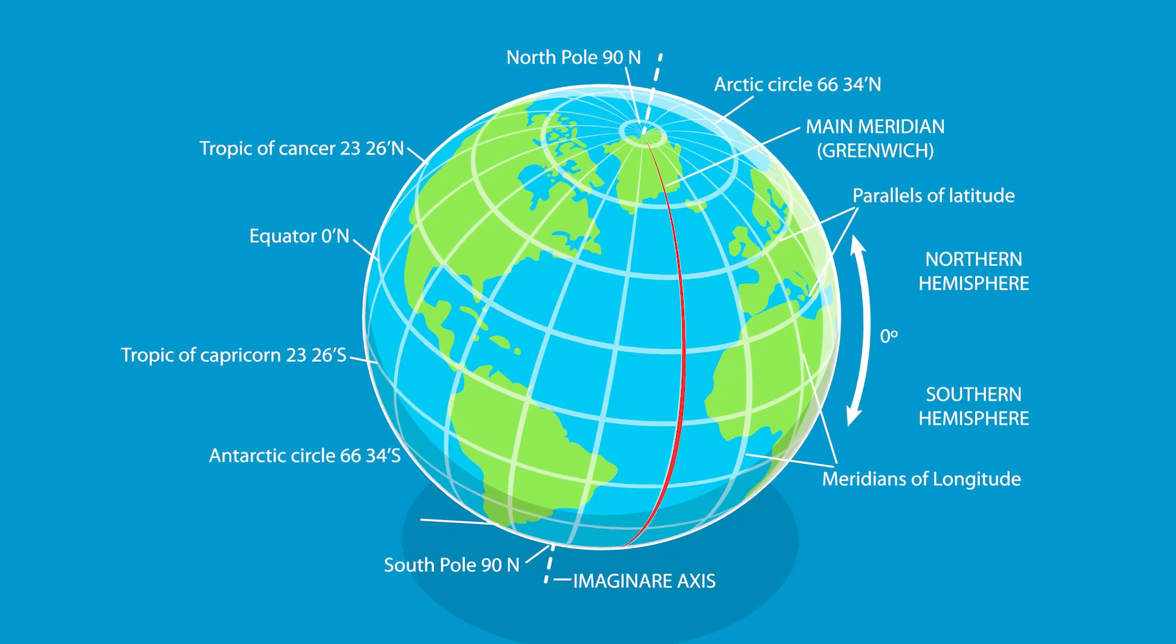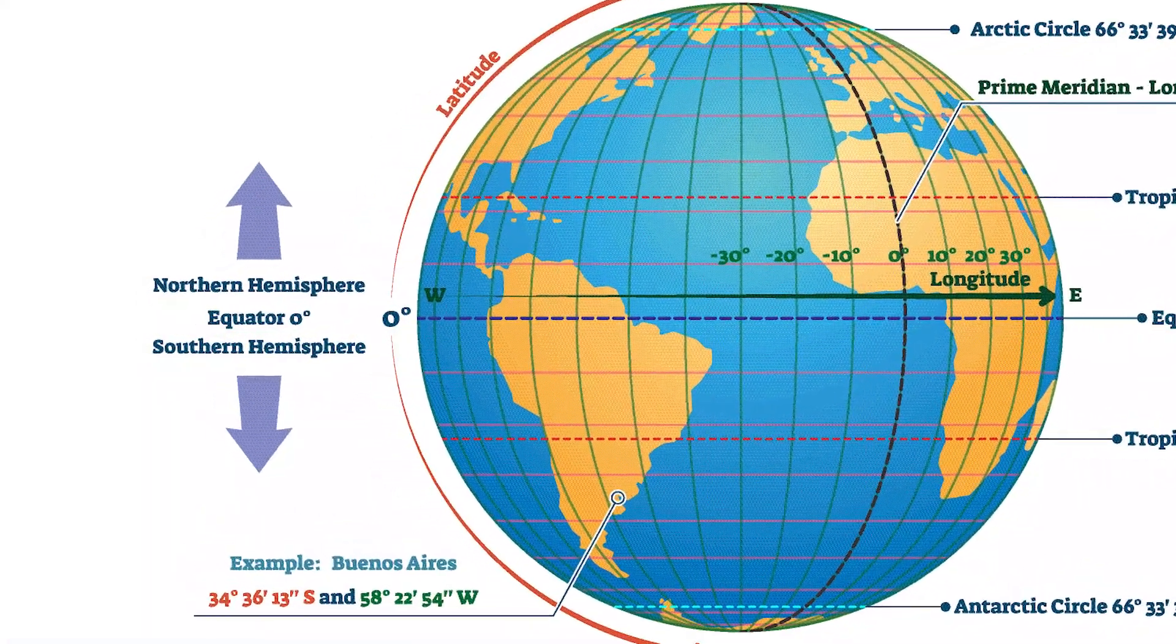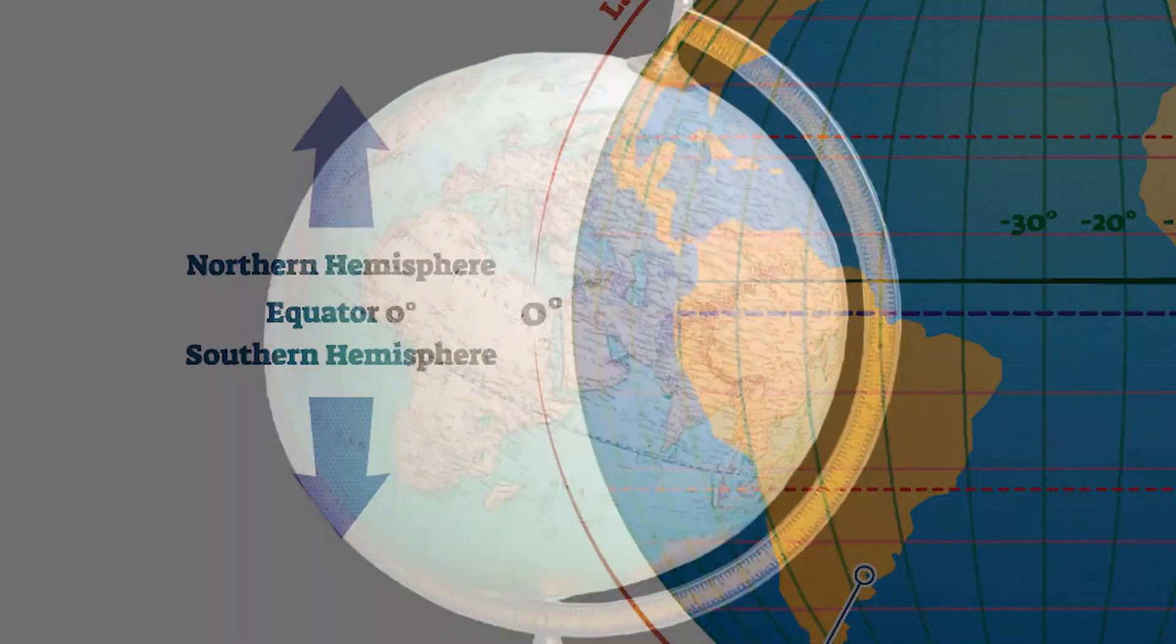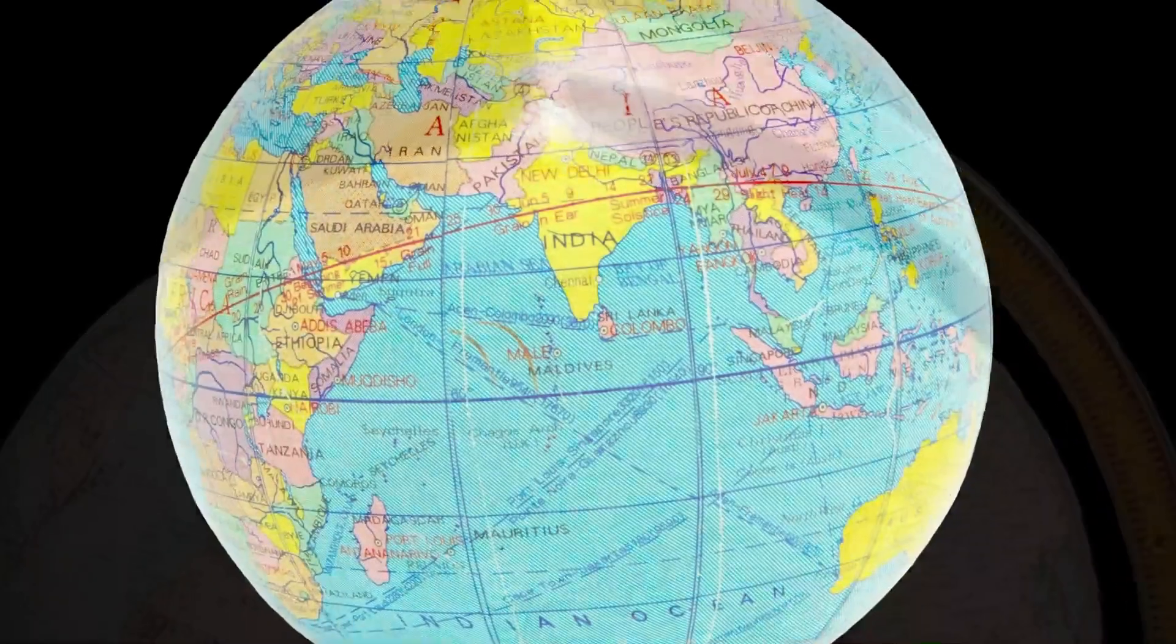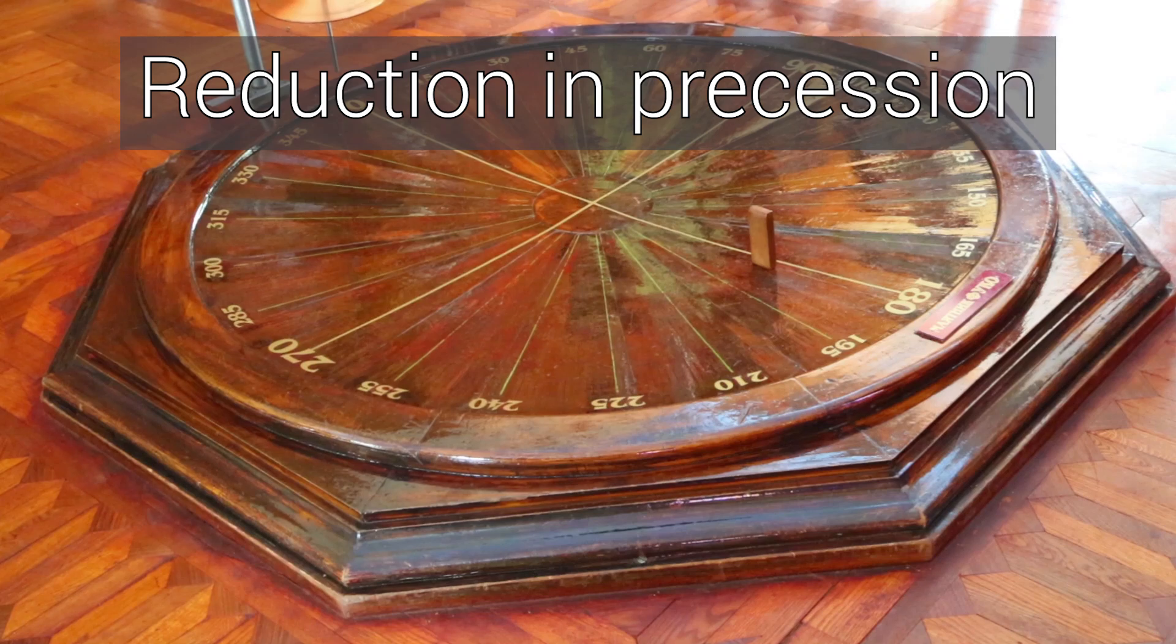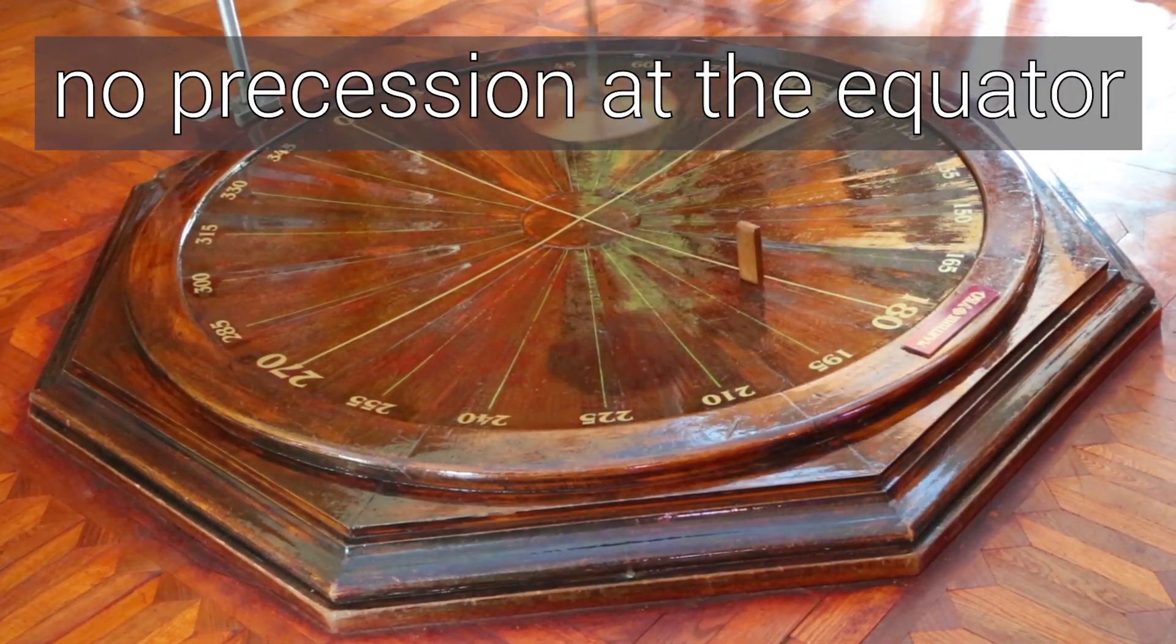The pendulum's behavior varies between hemispheres. It rotates clockwise in the northern hemisphere and counterclockwise in the southern hemisphere, intensifying its precession rate as one moves towards the poles. As it approaches the equator, the pendulum experiences a gradual reduction in precession, until there is no precession at the equator, continuing to swing back and forth in a constant direction.